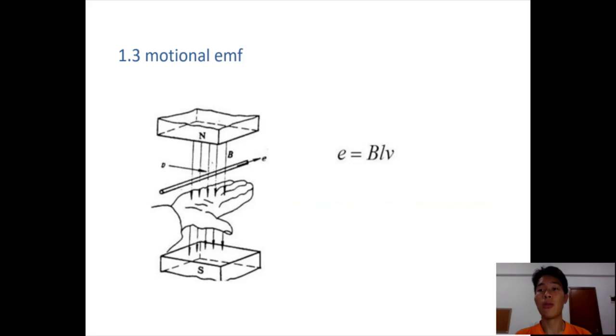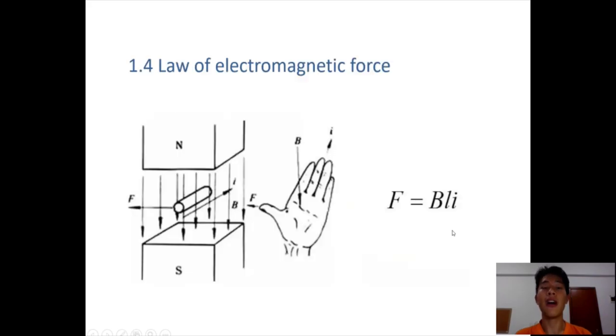Then in this case, the electromotive will equal to the multiplication of magnetic field strength, length of the conductors, and the speed of the cutting, these three elements. We can see in this formula.